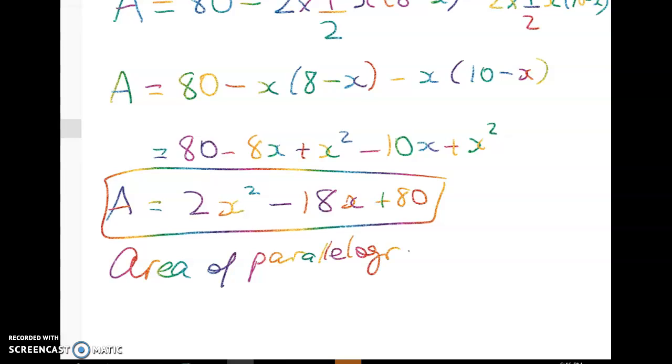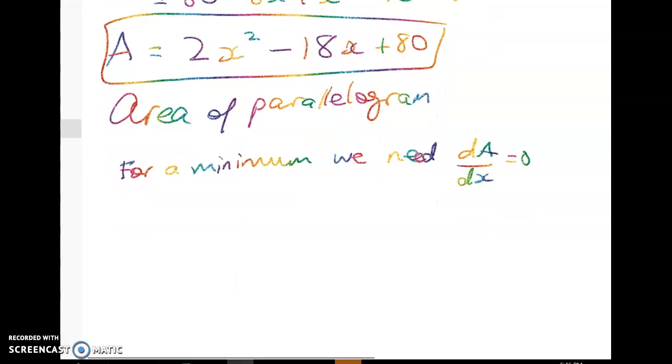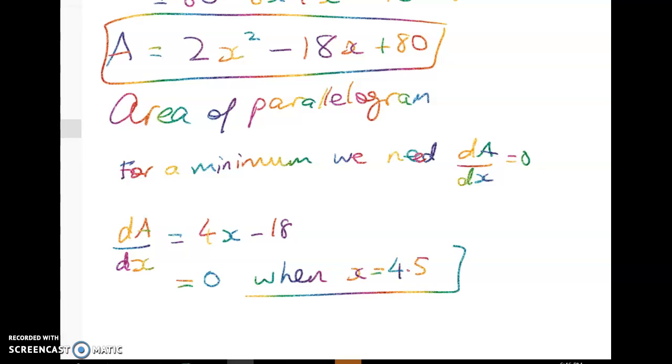And we want to figure out when it will be the smallest. So what we're going to do there is to say well for a minimum we need to have the gradient we need dA by dx is equal to 0. So we're going to solve that. So we've done all the hard work in this question really now we're going to go dA by dx is equal to 4x take away 18 which equals 0 when x is equal to 4.5.